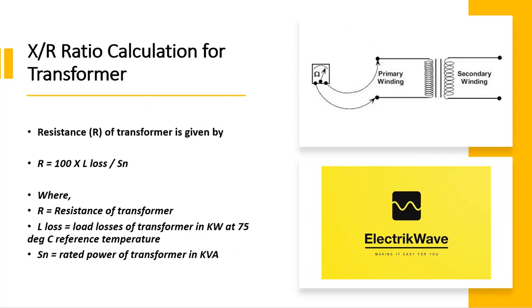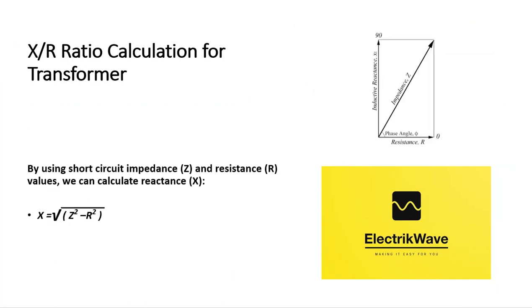Resistance R of the transformer is given by the formula, where R equals resistance of transformer, L_loss equals load losses of transformer in kW at 75 degrees Celsius reference temperature, and Sn equals rated power of transformer in kVA. By using short circuit impedance Z and resistance R values, we can calculate reactance X as shown.